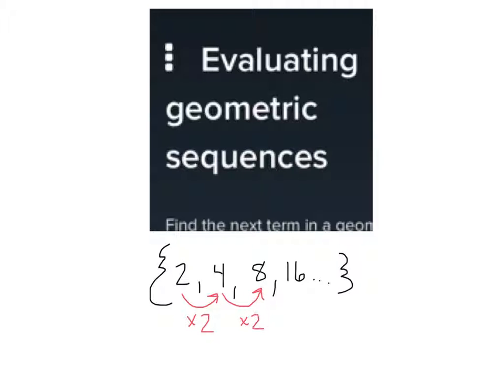And to go from 4 to 8, we're multiplying by 2 again, right? And 8 to 16, we're multiplying by 2. So a geometric sequence is when you add or divide. I mean, not add. I said it wrong, didn't I?